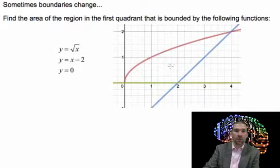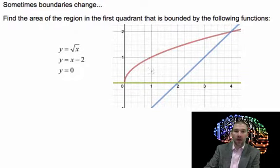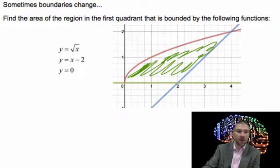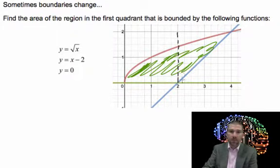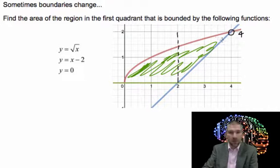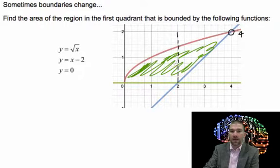On this problem, we want to find the area between the curves in the first quadrant. We've got a couple of different functions to investigate. From 0 to 2, we use the red function minus the green function, but from 2 to 4, a different blue function takes over. So for this problem we're going to look at two separate integrals and add them together.